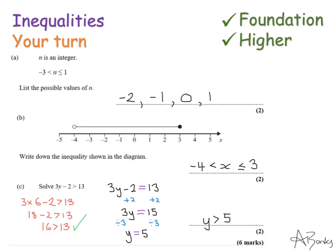Here are the solutions. The first question: n is all the numbers between minus 3 and 1, but this time it doesn't include minus 3 but does include 1. So you should have got minus 2, minus 1, 0, and 1.